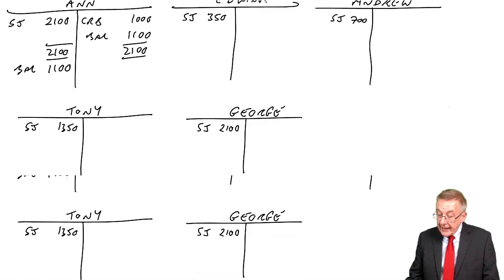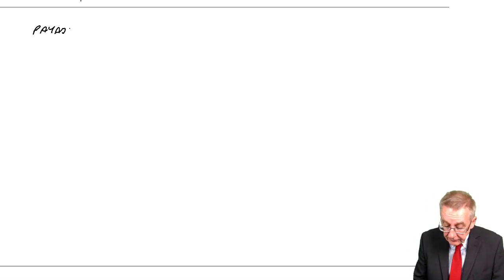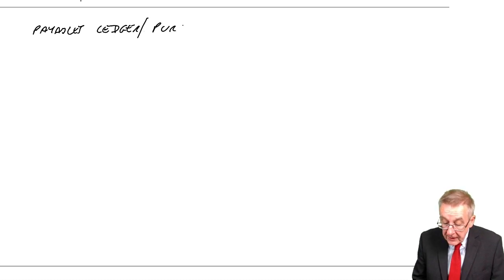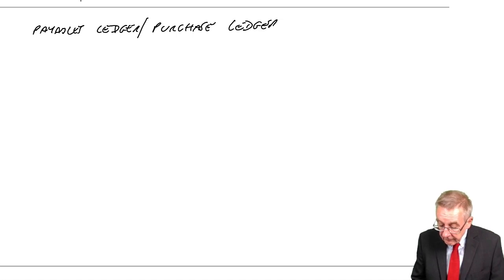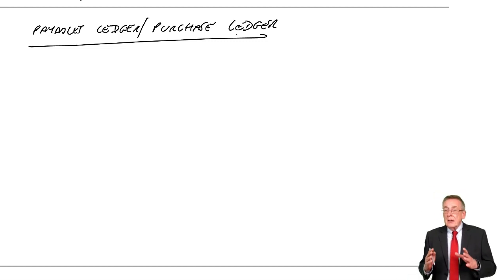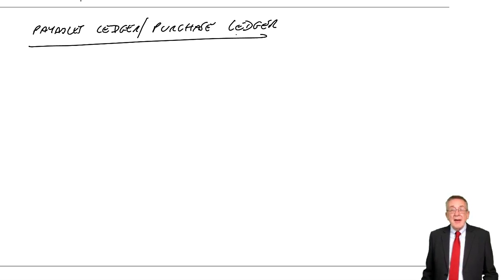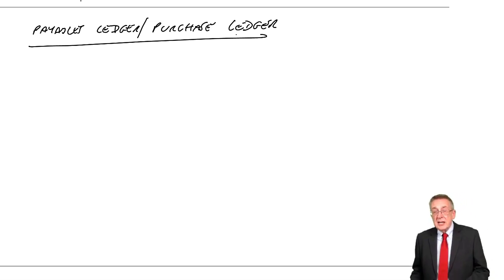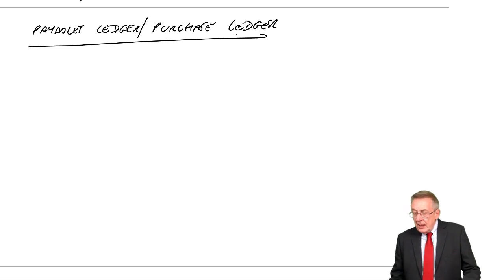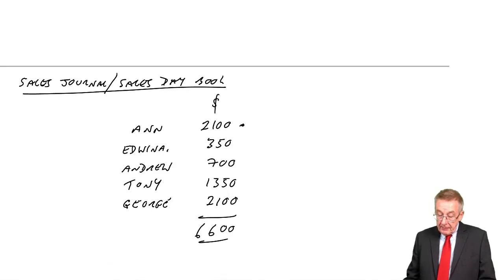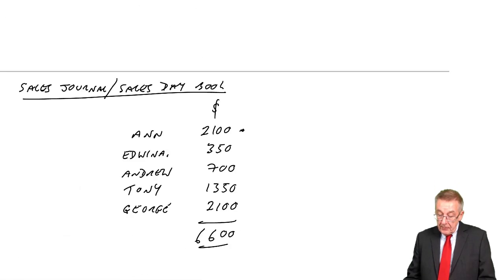In exactly the same way, we'll keep a record for suppliers on credit. We'll call this the Payables Ledger, which is a sensible name, or the other name is the Purchase Ledger. But appreciate, this book, whatever we call it, is just keeping a note of how much we owe our suppliers. So we'll have a page for each supplier on credit — Chris, William, and Bertha.